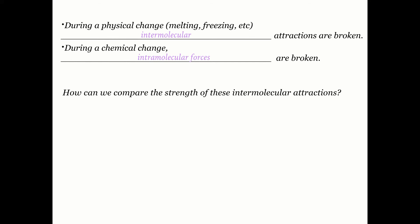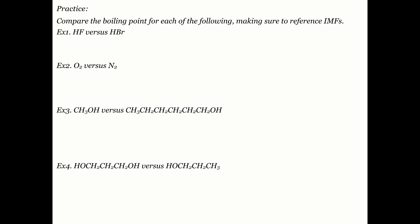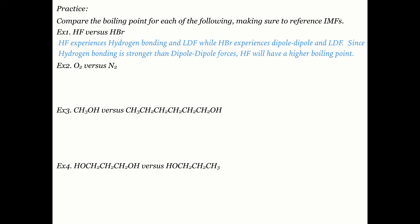We can compare intermolecular force strength in the lab by measuring boiling points and melting points — the stronger the intermolecular force, the higher those points will be. For example, comparing HF and HBr: HF experiences hydrogen bonding while HBr experiences only dipole-dipole attractions. Since hydrogen bonding is stronger than dipole-dipole forces, HF has a higher boiling point.